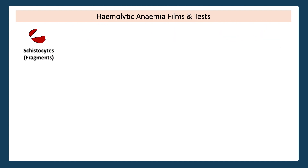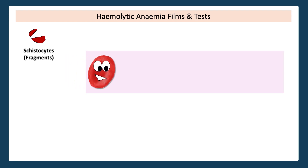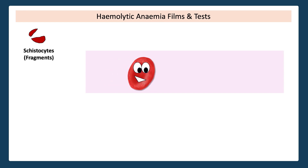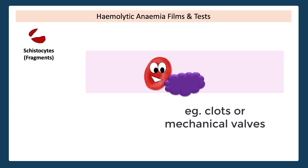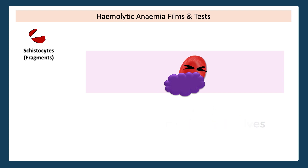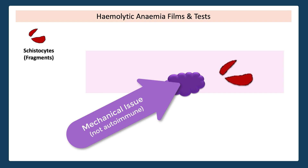Up first, we have schistocytes. These are also known as fragments because quite literally, these red cells have been mangled and fragmented. Once upon a time, this red cell was normal, stepping out of the bone marrow looking brand new. But along the way, as it travelled through the circulation, it came across some obstacles, like a small blood clot or a mechanical heart valve. And as it passed through this, it became damaged and a shadow of its former self. So schistocytes or fragments are due to a mechanical problem in the circulation.